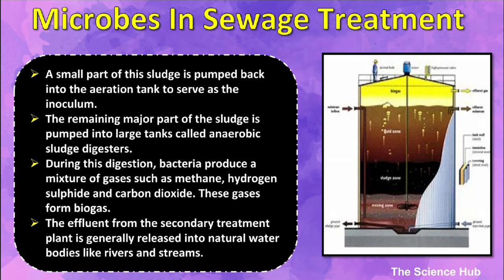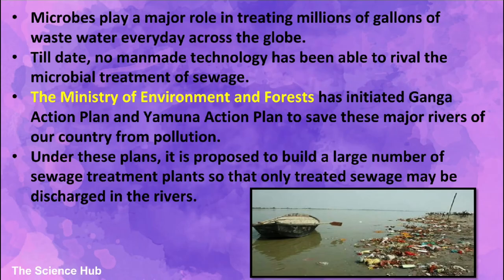The effluent from the secondary treatment plant is generally released into natural water bodies like rivers and streams. Microbes play a major role in treating millions of gallons of wastewater every day across the globe. The Ministry of Environment and Forests has initiated the Ganga Action Plan and Yamuna Action Plan to save these major rivers from pollution. Under these plans, it is proposed to build a large number of sewage treatment plants so that only treated sewage is discharged into the rivers.